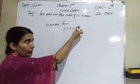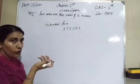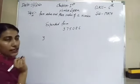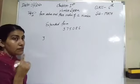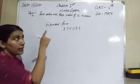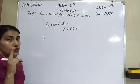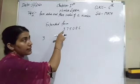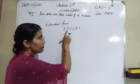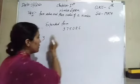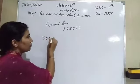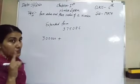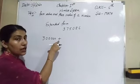To write a number in expanded form, use the place value and write it as an addition. Start from the first digit: 3. Count digits after 3 — one, two, three, four, five — write five zeros. So 3 becomes 300,000. Then add the next digit: 7 has four digits after it, so write four zeros — 70,000.